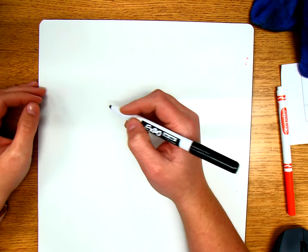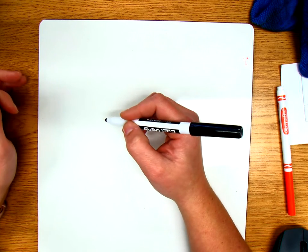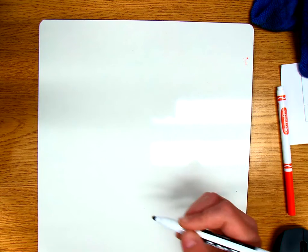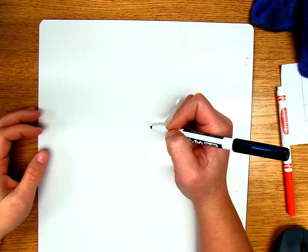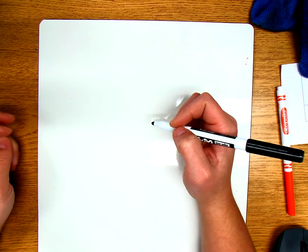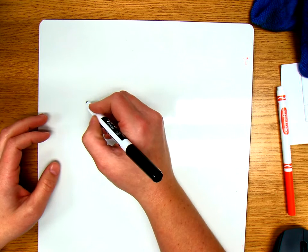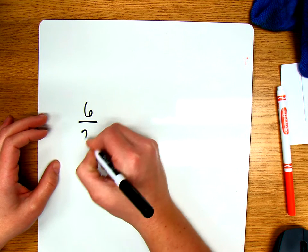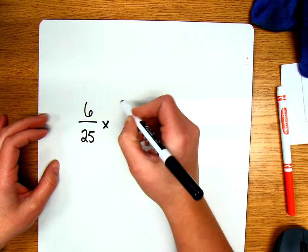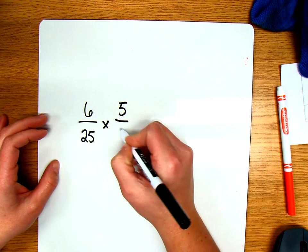Hey guys, this is a video on multiplying mixed numbers. Previously we were multiplying just a fraction times a fraction or a fraction times a whole number. As a reminder, those problems look something like 6/25 times 5/9.